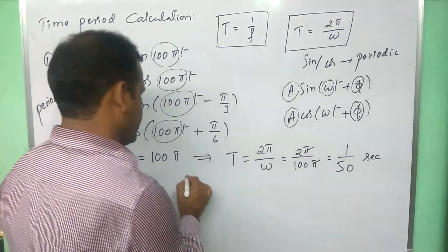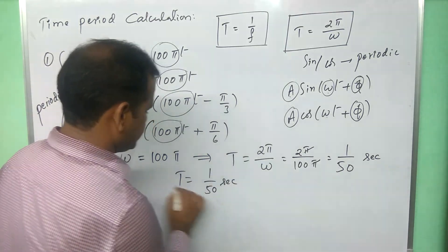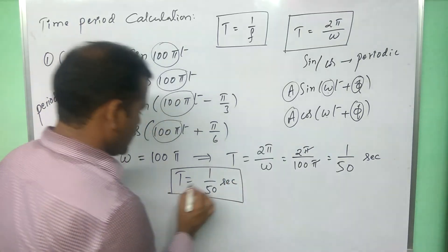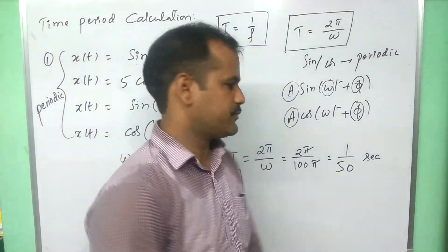So, all signals are having same time period 1 by 50 seconds like this. So, some more different practice examples I am giving in the coming videos. Thank you.